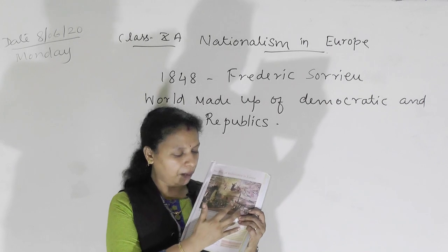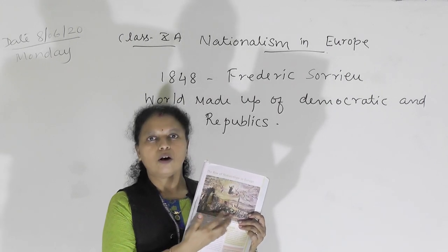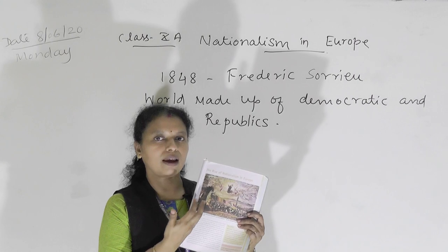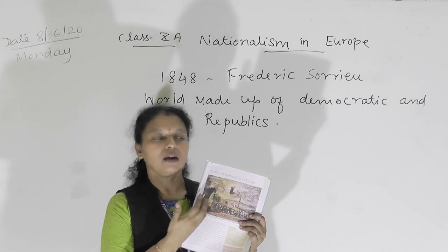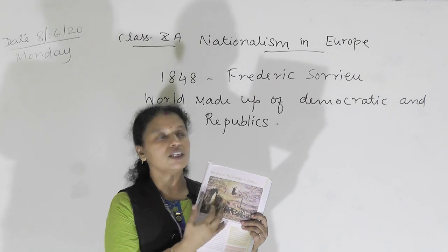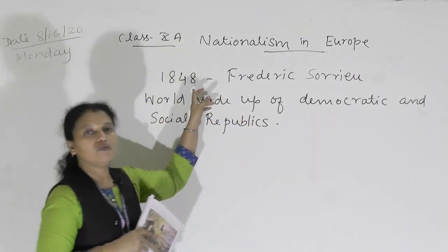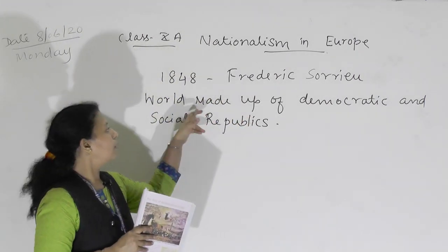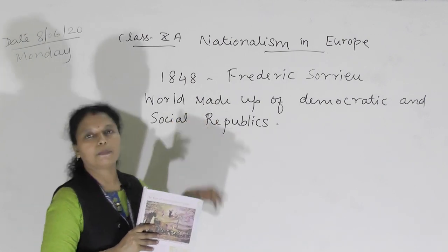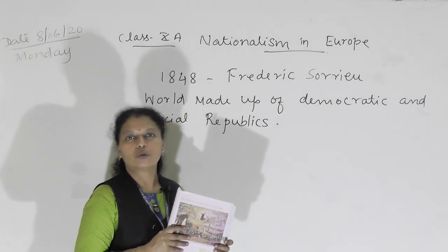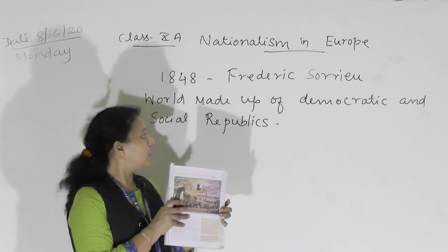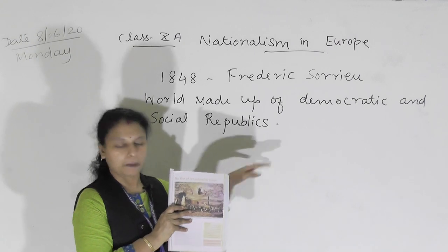Why are these people moving in front of the statue of liberty, and what does it represent? This is actually a painting done by Frederick Soria in 1848. The theme or topic's name is known as 'World Made Up of Democratic and Social Republic.'